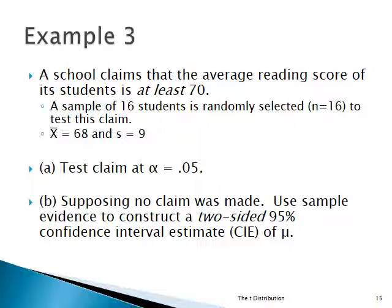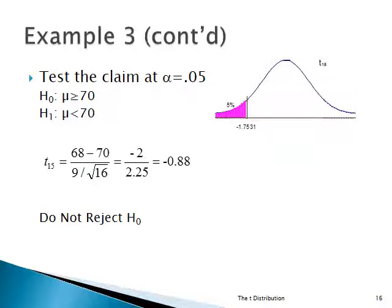In Part A, we're going to test the claim at an alpha of 0.05. Here's how we set it up: H0 is that mu is greater than or equal to 70. H1, if you reject H0, is that mu is less than 70 — and the school is in trouble. The formula: T15 equals 68 minus 70 divided by the standard error of the mean, 9 over the square root of 16. The numerator gives us minus 2, and the denominator is 2.25. We get minus 0.88 as our computed t-value.